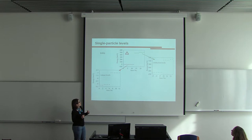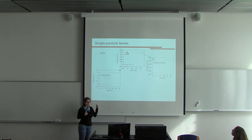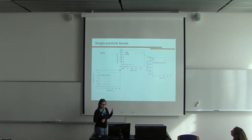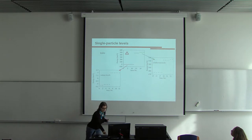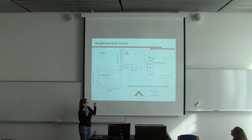Similar features are observed for the valence band, but here the energy gap is much smaller due to much higher effective mass. Those polygonal quantum rings have attracted so much attention mostly due to the fact that in the corner areas effective quantum wells are formed.